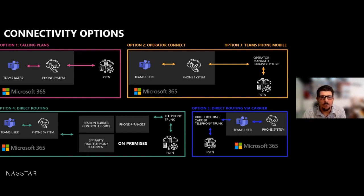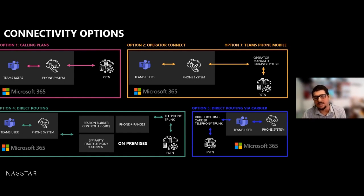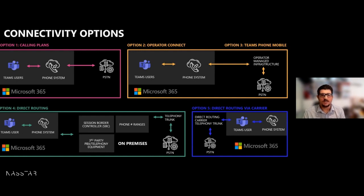Option two is operator connect, where this is operator-managed infrastructure — particularly useful when calling plans aren't available or your existing telephony carrier already supports this option. This allows you to leverage existing contracts, saving costs and enabling faster deployment, with the carrier managed via the Teams admin center. Option three is Teams from Mobile — formerly called operator connect mobile. This is one number for all, using a company-owned SIM-enabled phone number that leverages both mobile networks and internet connections, great for field employees. The carrier must be in the Teams phone mobile directory, and while relatively new with limited carrier choice, more carriers are becoming available.